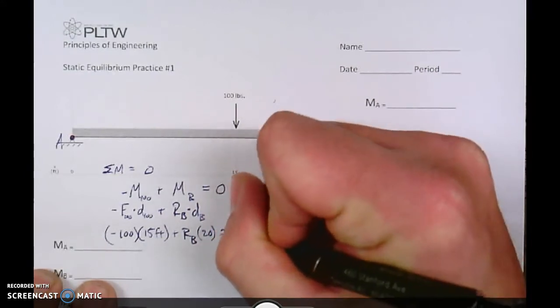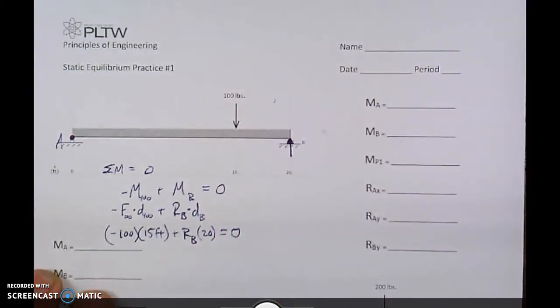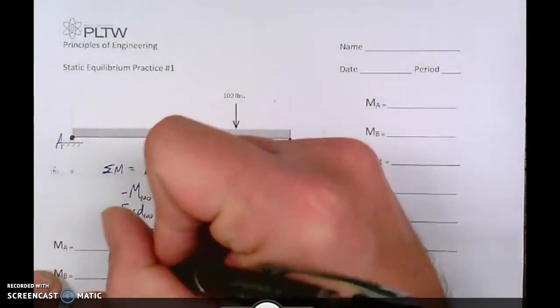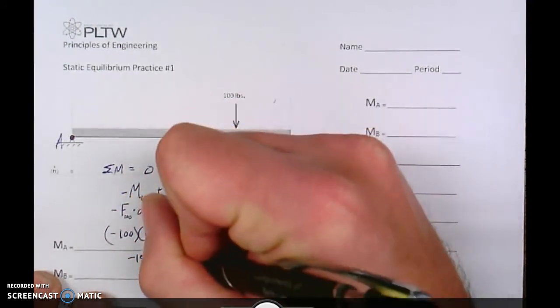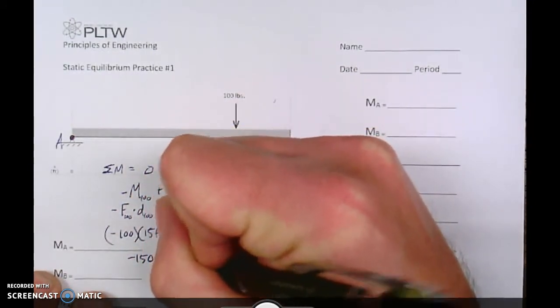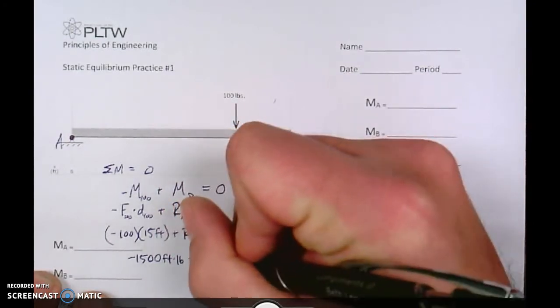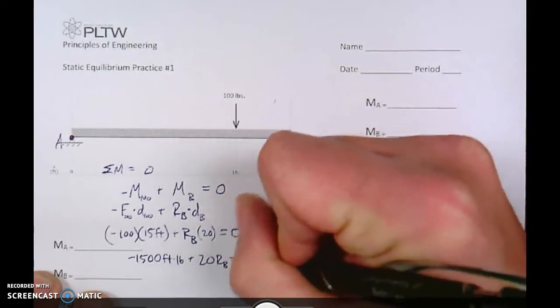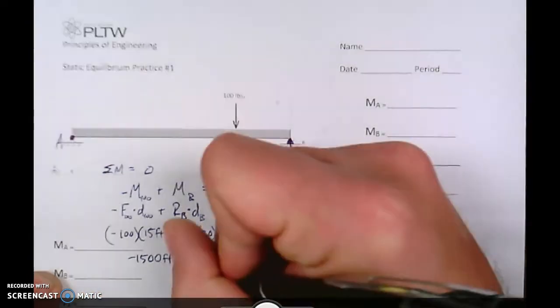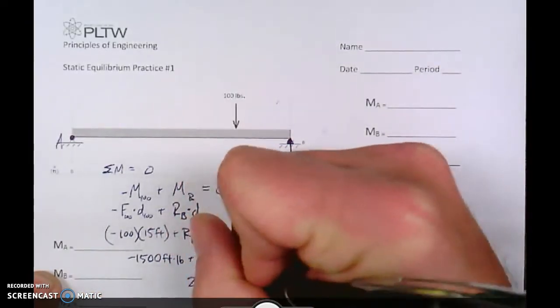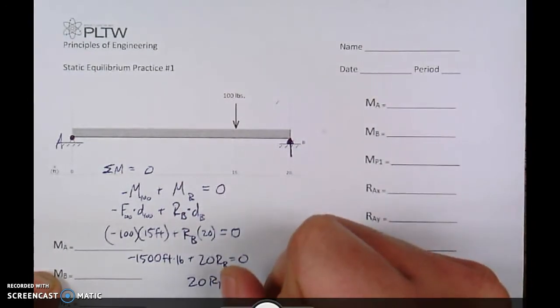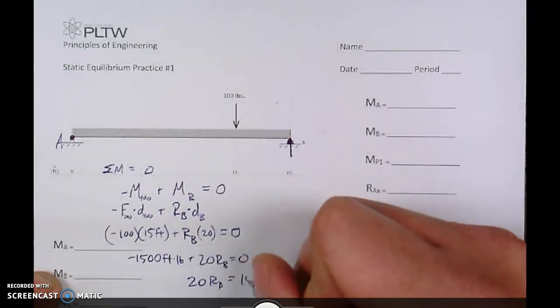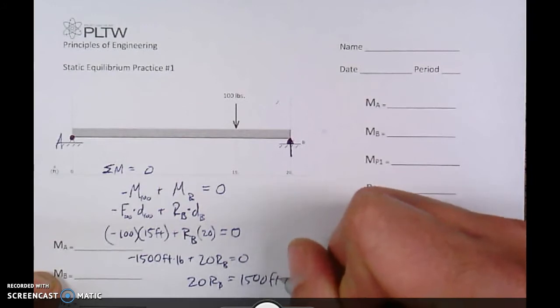And the sum of those two has to equal zero. So, we have negative 1,500 foot-pounds plus 20 times reaction force B equals zero. So 20 times reaction force B equals 1,500 foot-pounds.